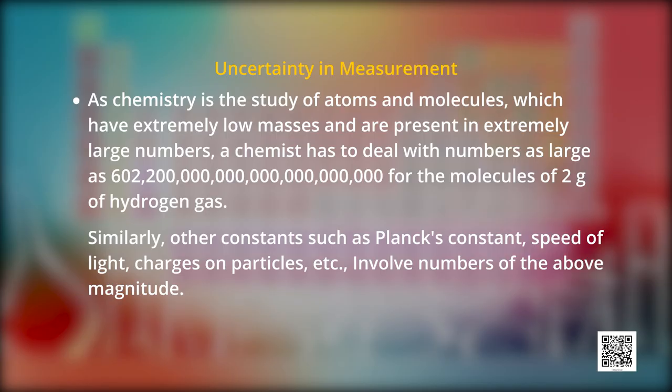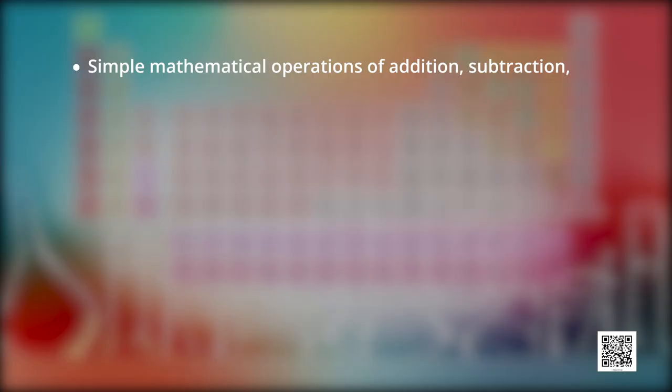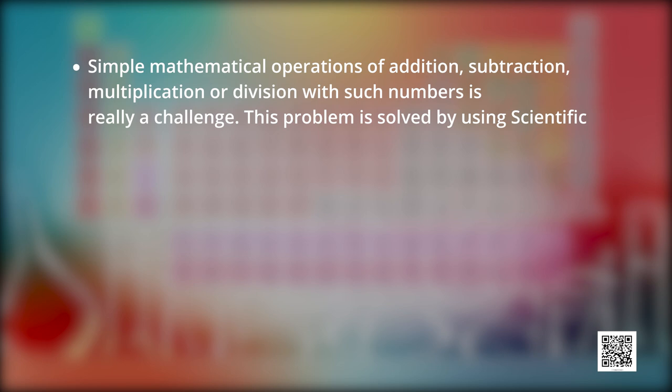So, chemists have to deal with not only with the large number of atoms and molecules, but also with the calculations containing large numbers. We are going to learn about the scientific notation so we can do the calculation easily. For example, Avogadro numbers contain 20 zeros after 6022. Similarly, other constants such as Planck's constant, speed of light, charges on the particles, etc. involve numbers of the above magnitude. It may look funny for a moment to write or count number involving so many zeros. But it offers a real challenge to do simple mathematical operations of addition, subtraction, multiplication or division with such numbers. This problem can be solved using scientific notation, which is also known as exponential notation.